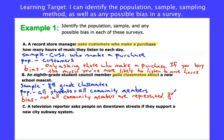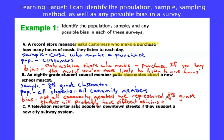All we can say is that eighth grade students will probably have different opinions than other age groups. You have a bit of writing involved with the bias — you have to identify the sample, the population, and then the bias. We're going to work a lot on this tomorrow because it's a difficult concept to grasp. What we want to look at now is ways to avoid bias — ways to make sure all our groups are represented.